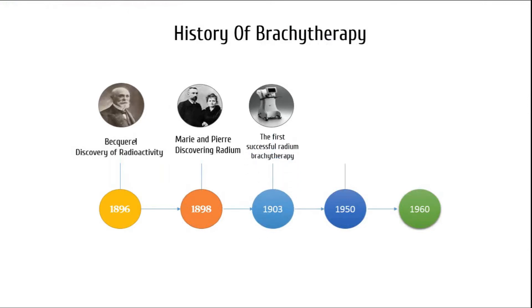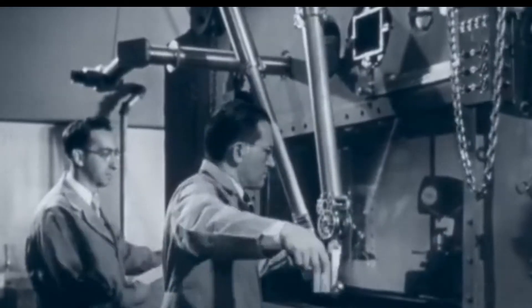The surface mold and plaque treatments were followed by intracavitary techniques for cervical and endometrial cancer. A few years later, an interstitial radium brachytherapy technique was developed and most body areas were treated with radium brachytherapy. In the 1950s, radium was replaced by artificial Cobalt-60 and Cesium-137.